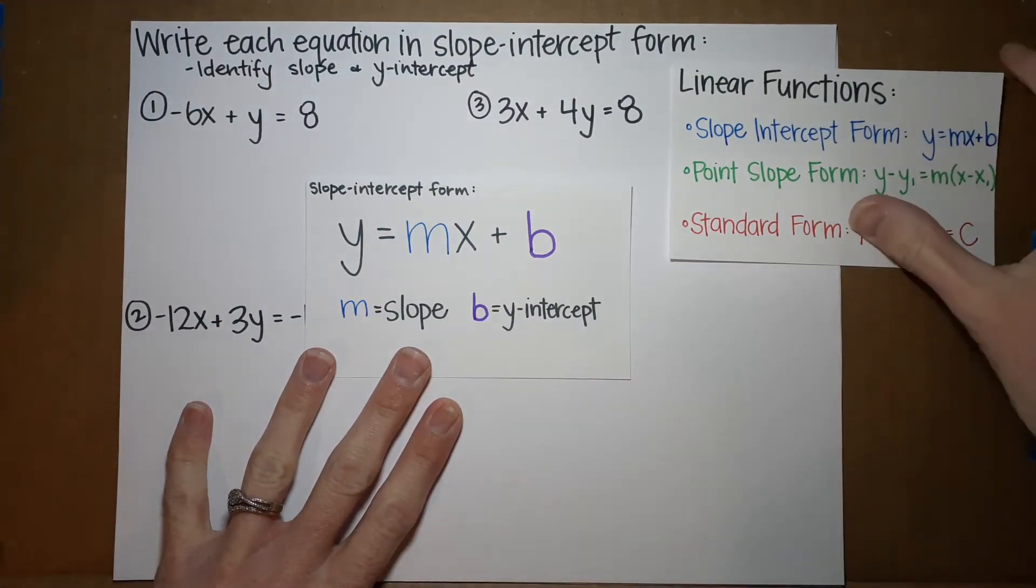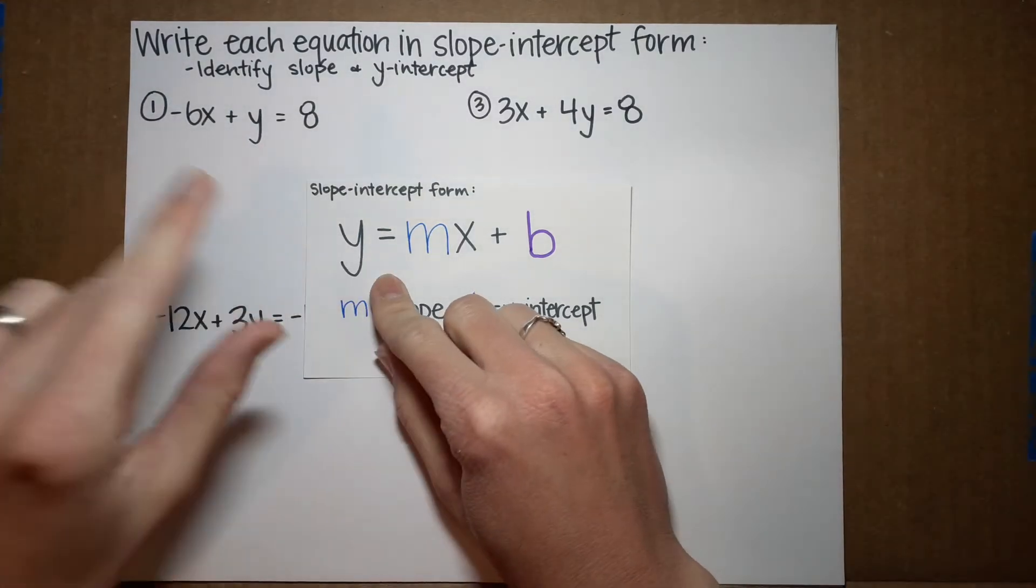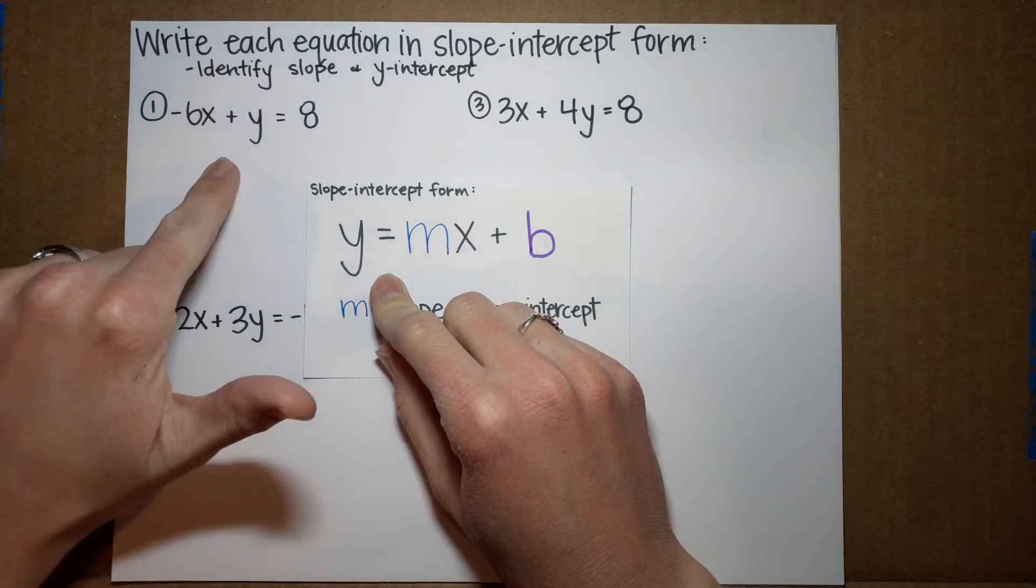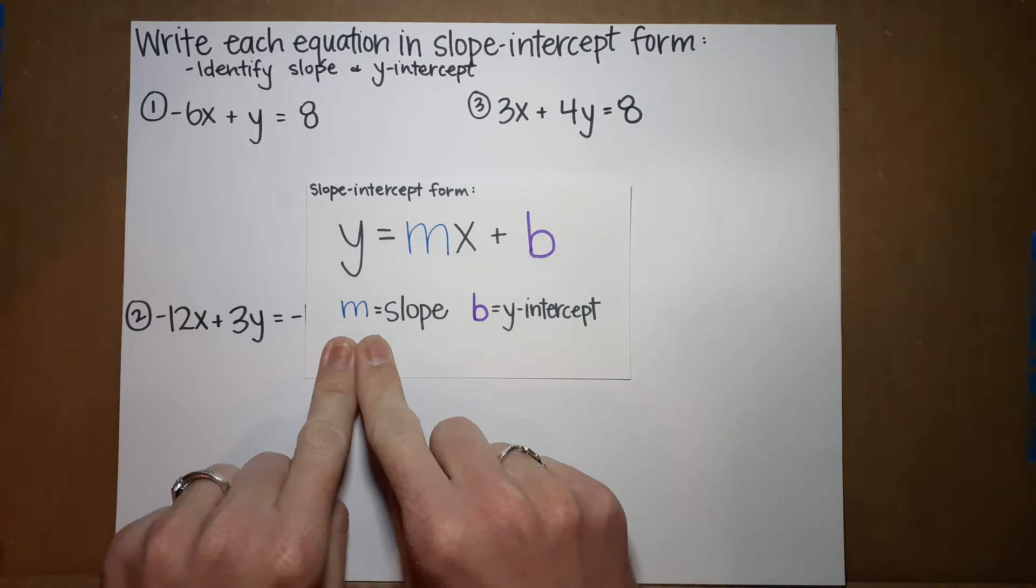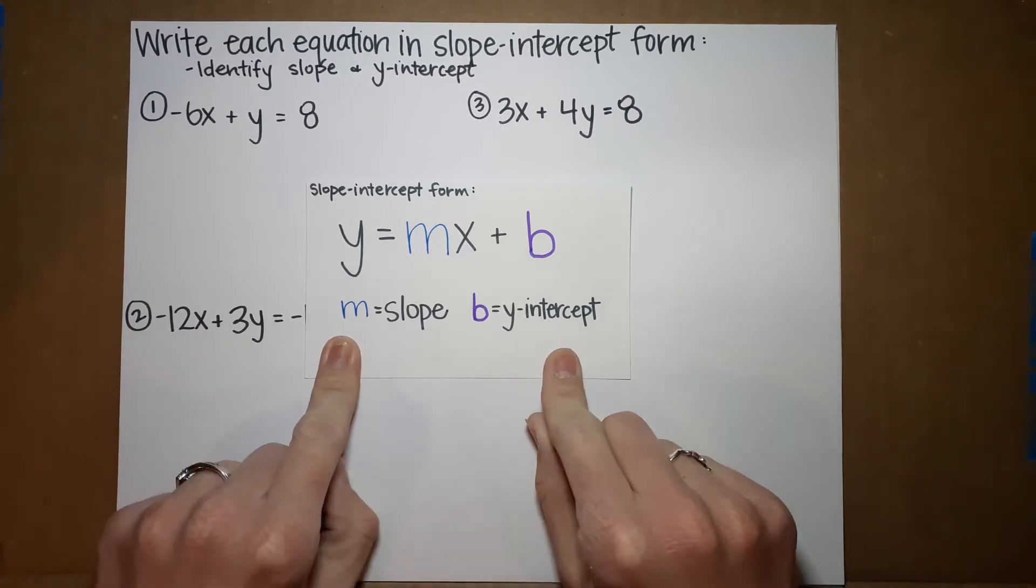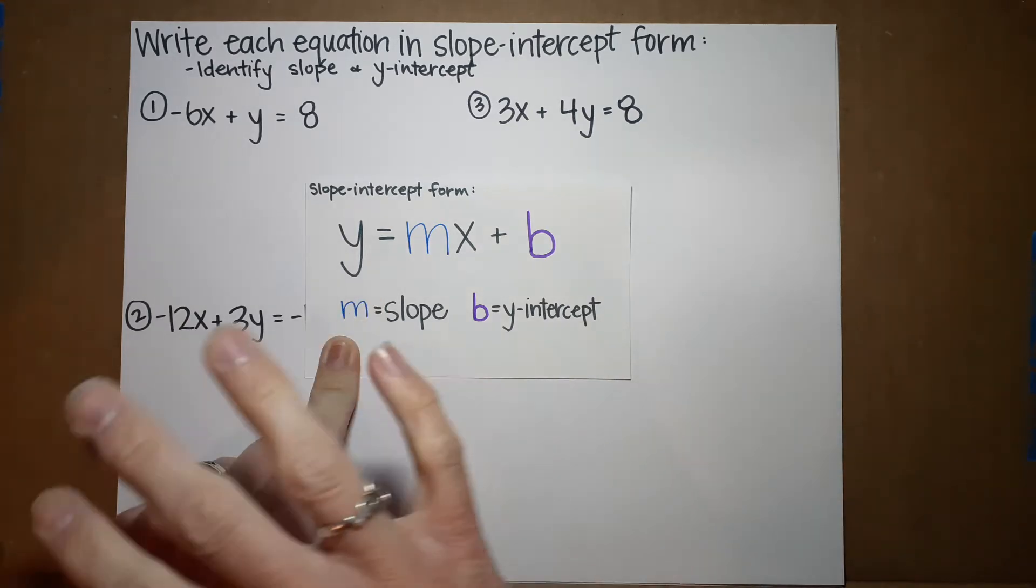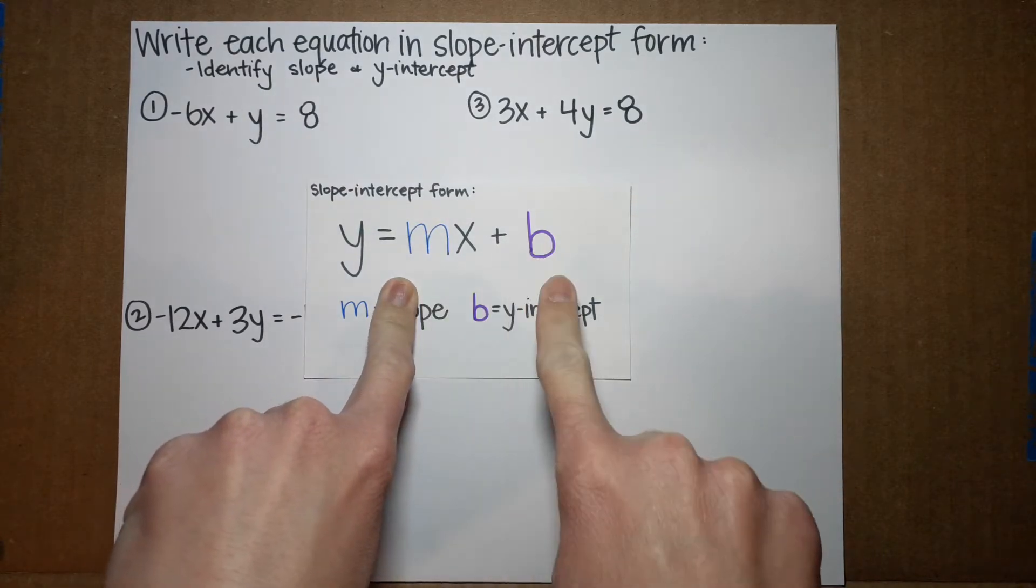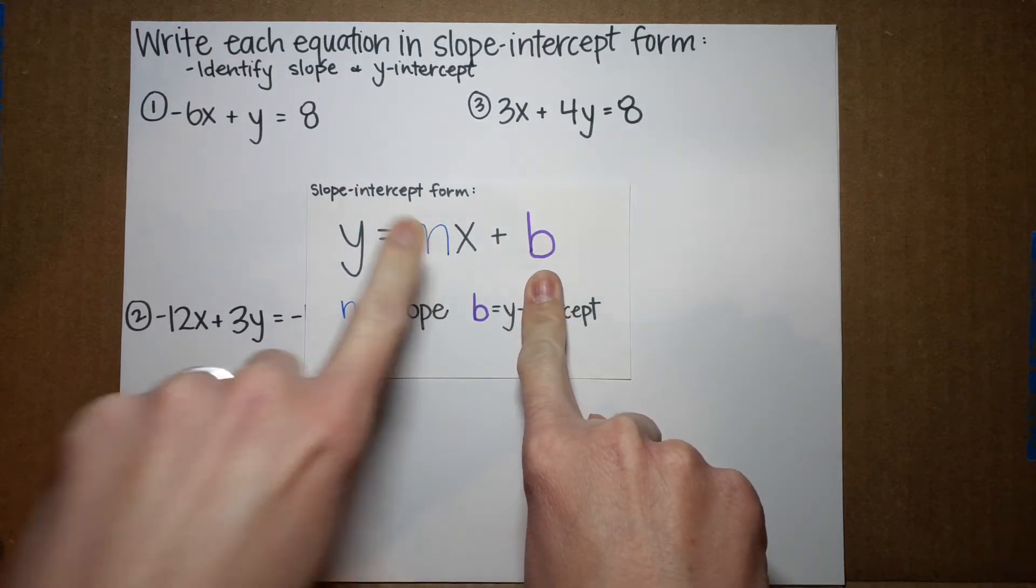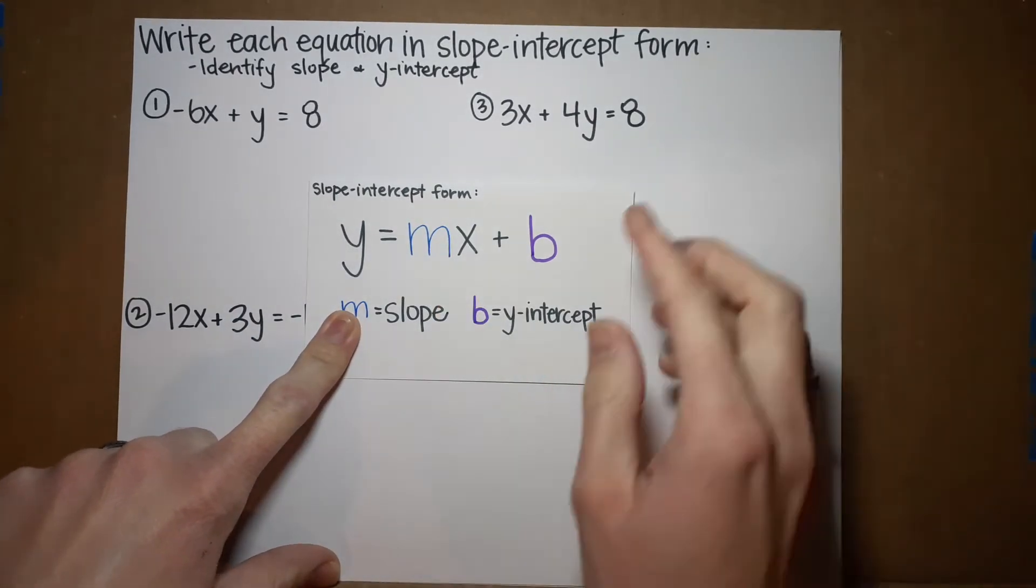Slope-intercept form, my favorite. y equals mx plus b. Okay, we just need to get y by itself and we're good. m is my slope, b is my y-intercept. If you're feeling scared, don't, don't worry, we're going to take it slow. When I get my answer, m will be a number, b will be a number, y and x will stay y and x. Okay, let me show you.